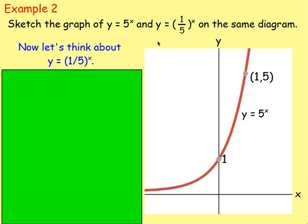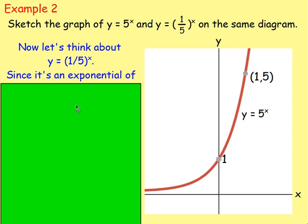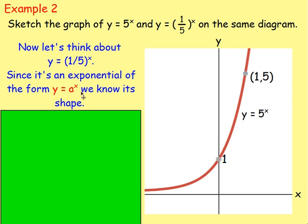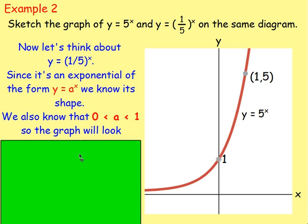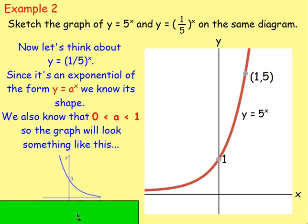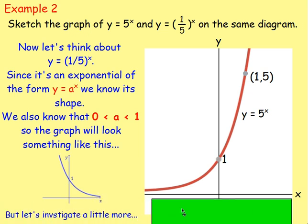Now we need to think about y equals one fifth to the power of x. It's still some number to the power of x, so it's still an exponential. This time, one fifth is really 0.2, so the value of a is between 0 and 1. When your exponential has a between 0 and 1, the graph will slope down rather than going up. We still don't really know the exact points it goes through, so we have one fifth to the power of x — let's write this a different way.